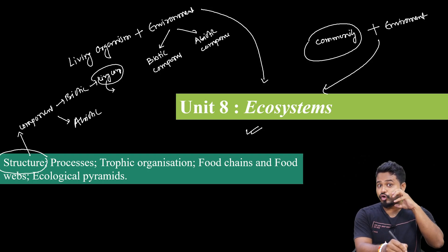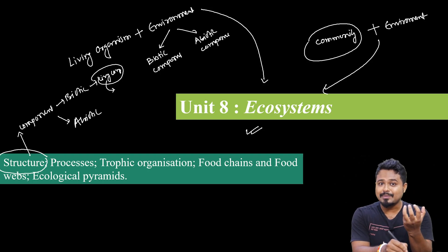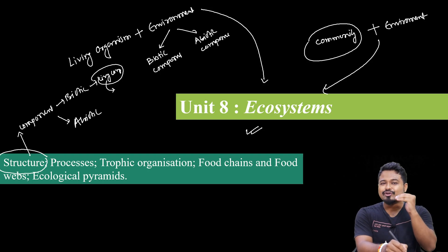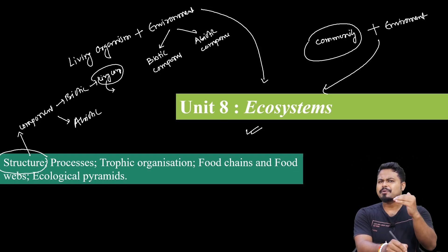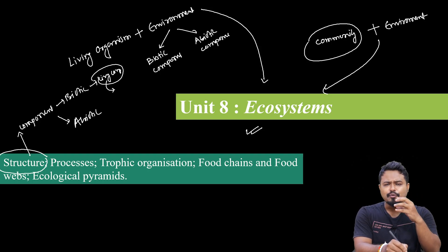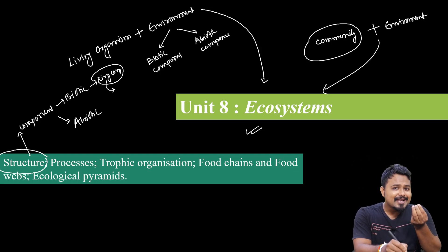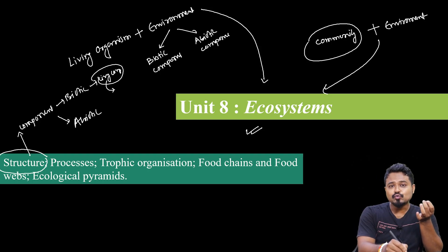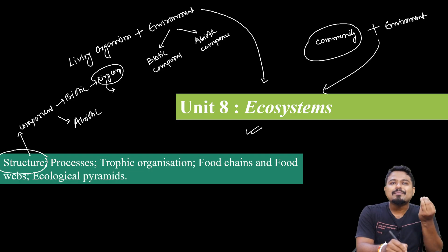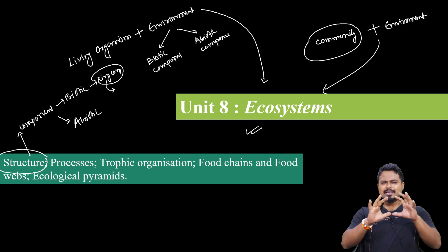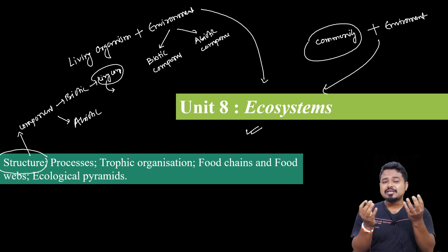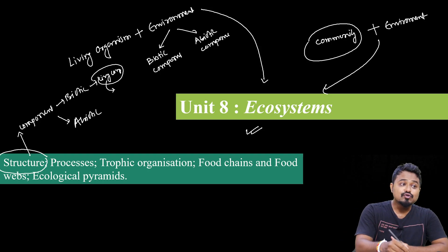Next we have trophic levels: trophic level 1 are producers, trophic level 2 are primary consumers, trophic level 3 are secondary consumers, and trophic level 4 are tertiary consumers.